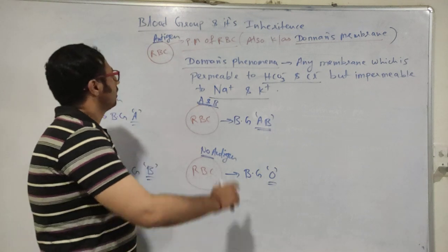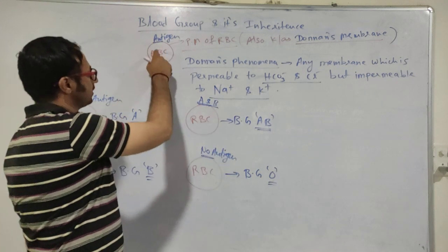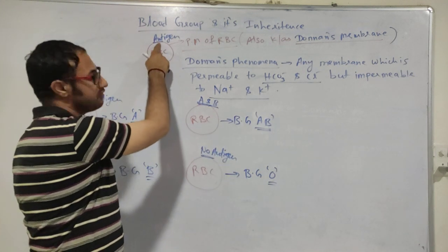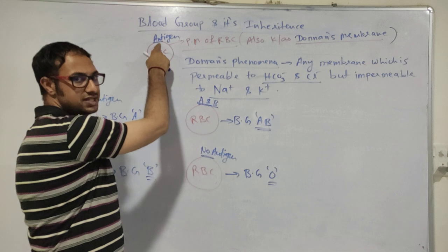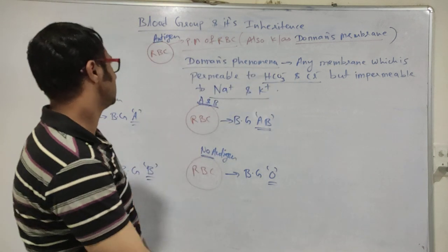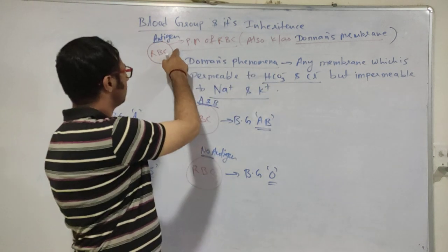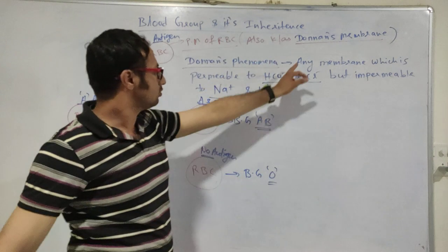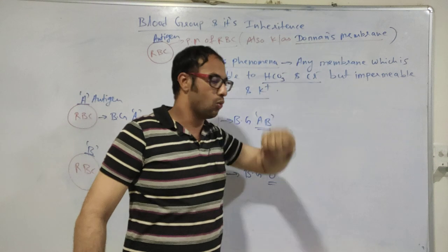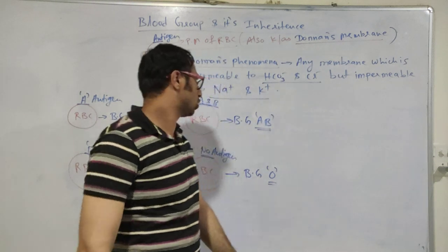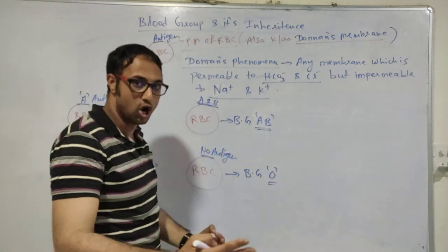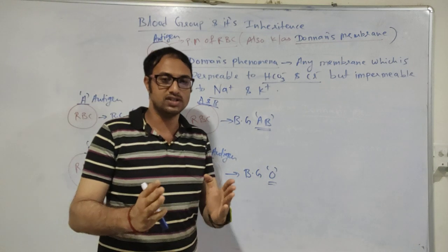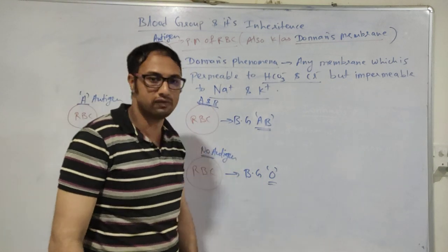If any antigen is present on the surface or plasma membrane of RBC, that will determine the blood group of that person. The plasma membrane of RBC is also called the Donance membrane, because the plasma membrane of RBC follows the Donance phenomena.